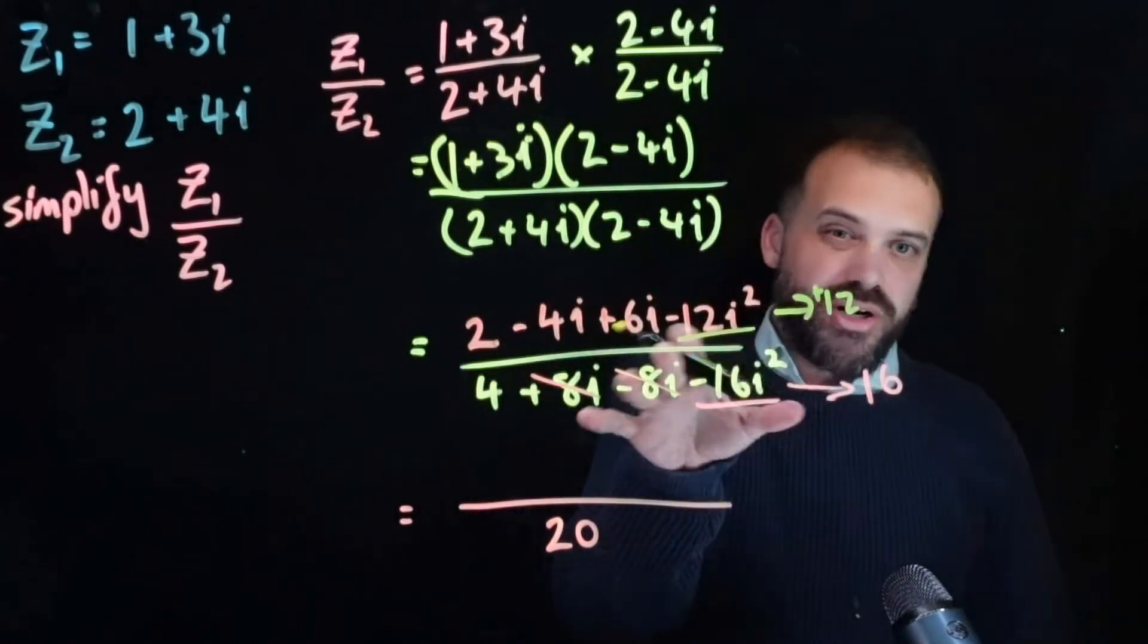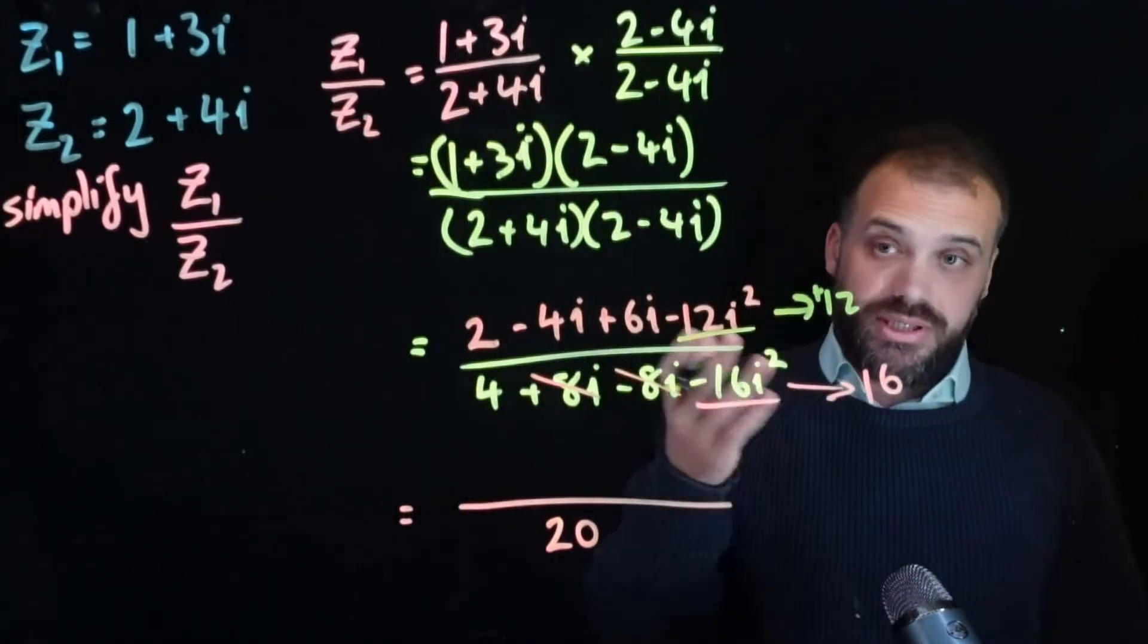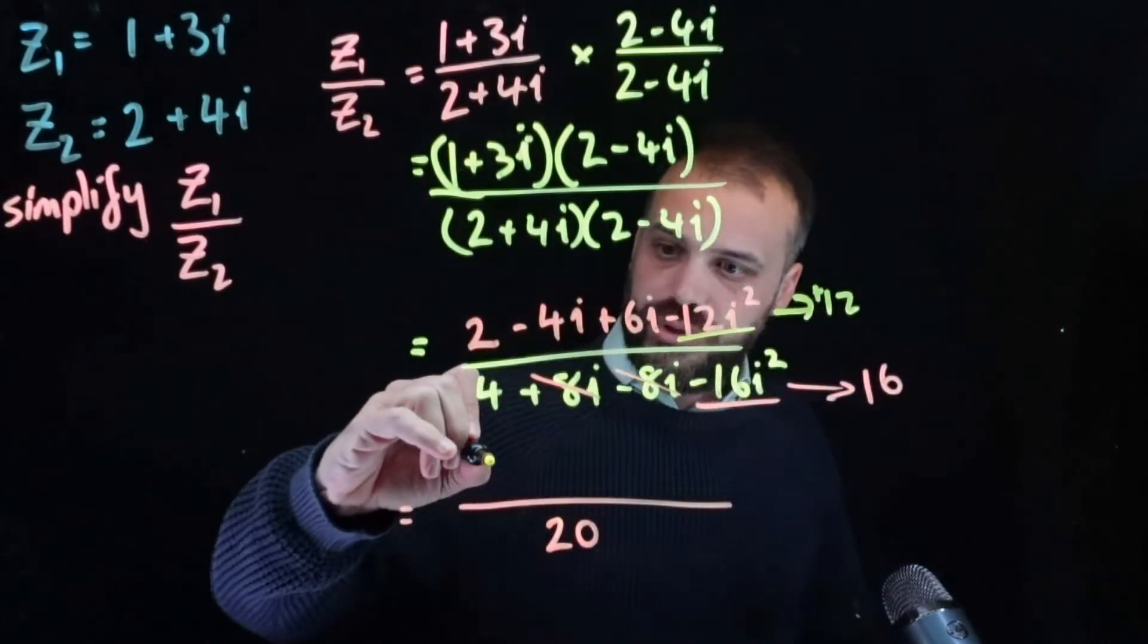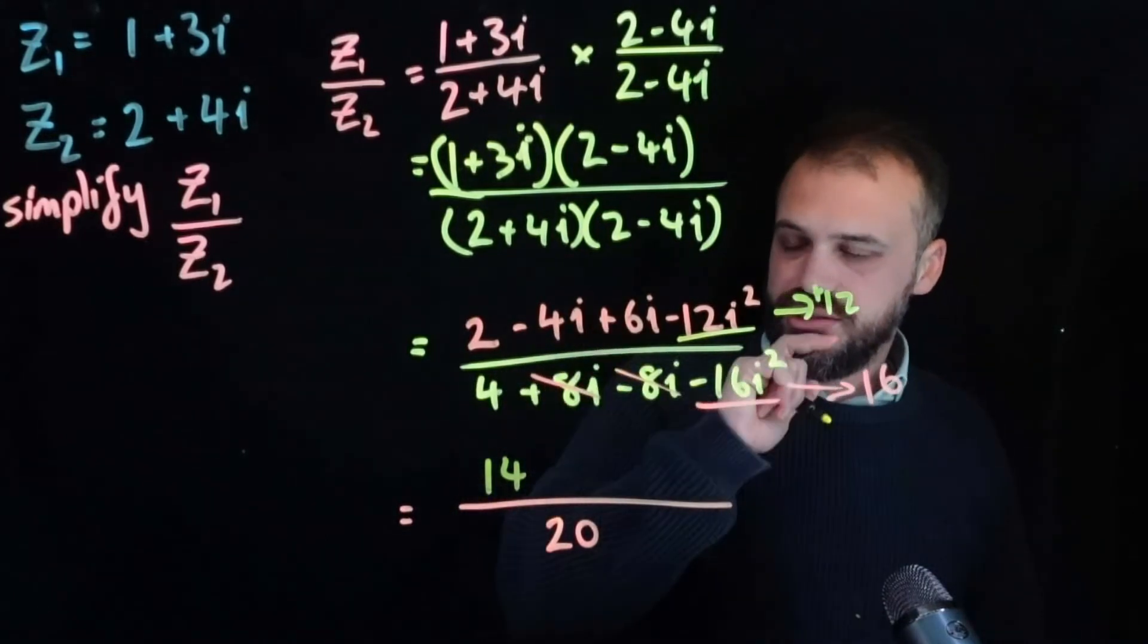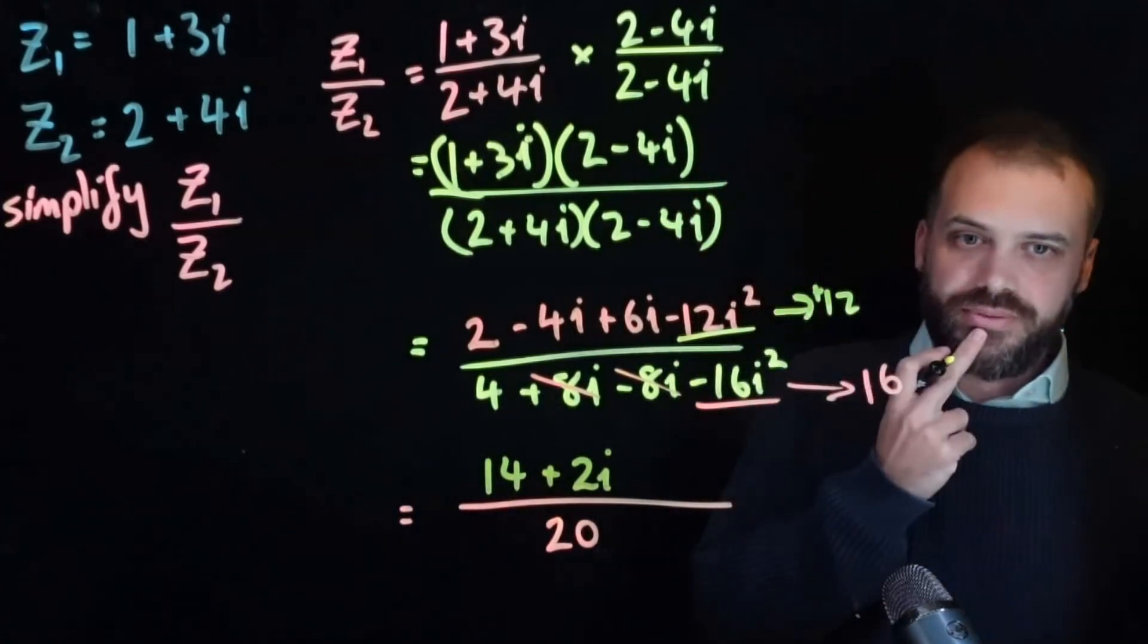Okay, so this time, the numerator is not purely real or purely imaginary. It might be, but it's not in this case. We have 2 plus 12, which is 14, and we have negative 4i plus 6i, which is positive 2i.